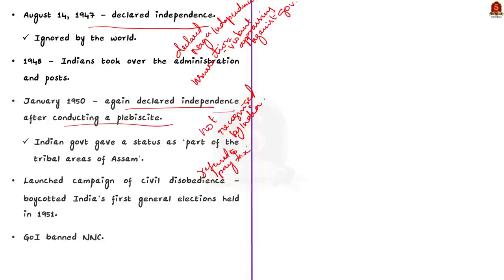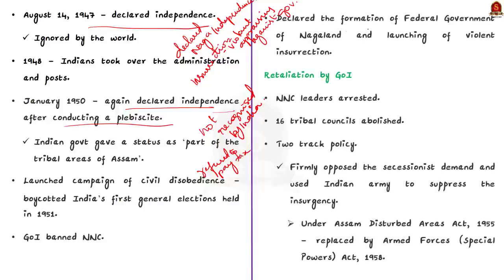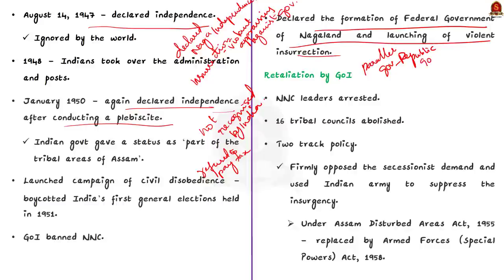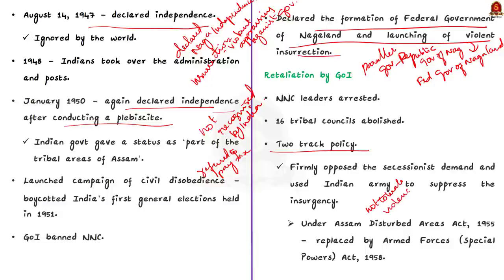The Government of India banned the NNC. Nagas then declared the formation of an independent government and launched violent insurrection. A parallel government was set up in 1954 called the Republican Government of Free Nagaland, renamed in 1956 the Federal Government of Nagaland. As a result, NNC leaders were arrested and 16 tribal councils under NNC were abolished. The Government of India followed a two-track policy: firmly opposing secessionist demands while sending the Indian Army to Nagaland in early 1956 under the Assam Disturbed Areas Act 1955, which declared the Naga Hills District a disturbed area. This act was later replaced by the Armed Forces Special Powers Act 1958, giving armed forces special powers to operate in disturbed areas.